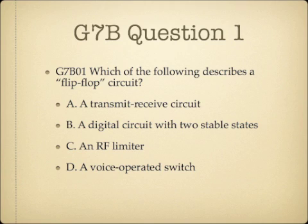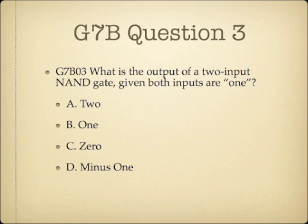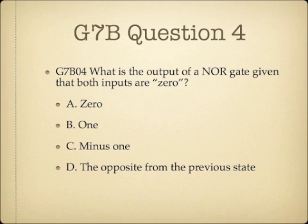Question 1: Which of the following describes a flip-flop circuit? A. A transmit-receive circuit. B. A digital circuit with two stable states. C. An RF limiter. Or D. A voice-operated switch. Question 2: Why do digital circuits use the binary number system? A. Binary 1s and 0s are easy to represent with an on or off state. B. The binary number system is most accurate. C. Binary numbers are more compatible with analog circuitry. Or D. All of these answers are correct.